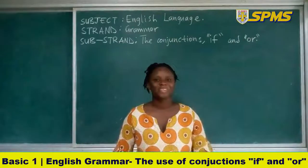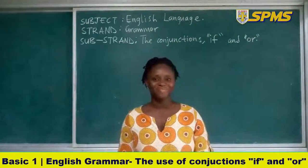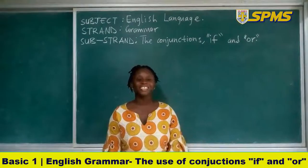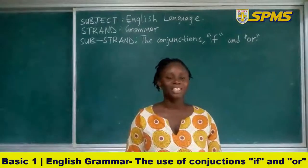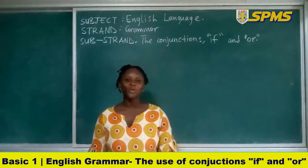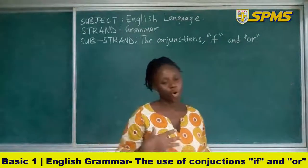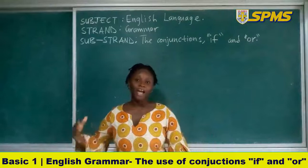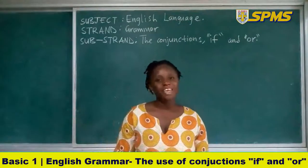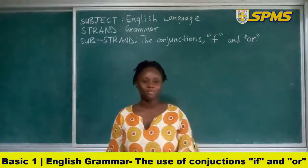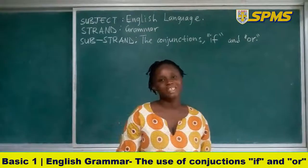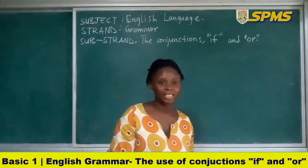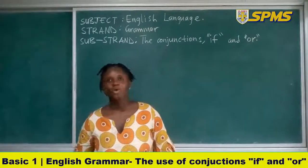So children, what have we learned today? We learned about the conjunction 'if' and the conjunction 'or'. The conjunction 'if' shows condition — it is when something happens as a result of something that happened earlier. For example: you will pass your exams if you study hard. So if you don't study hard, you will not pass your exams.